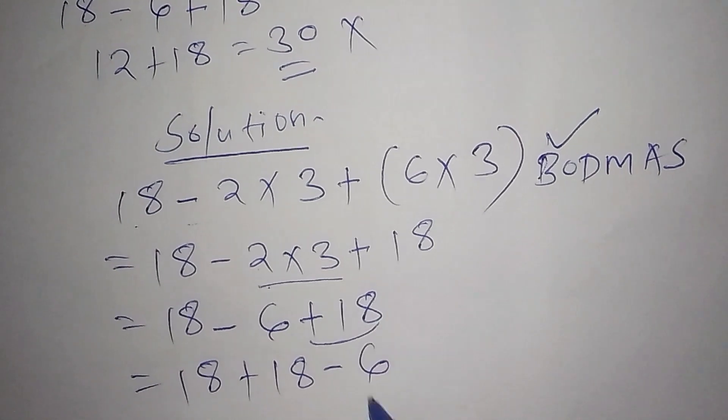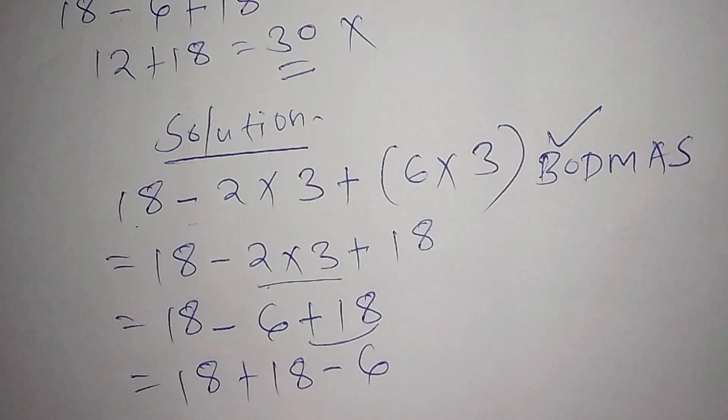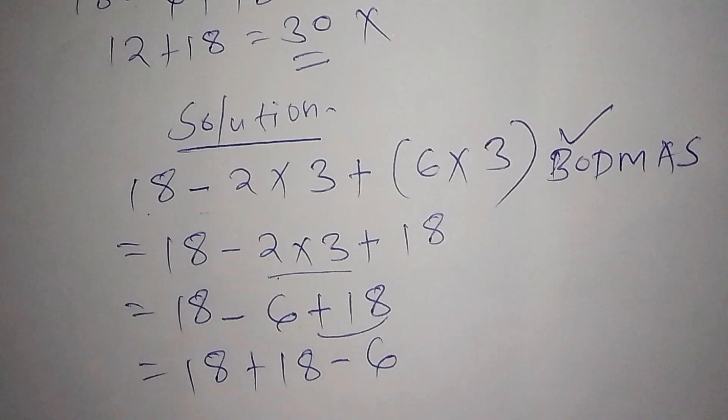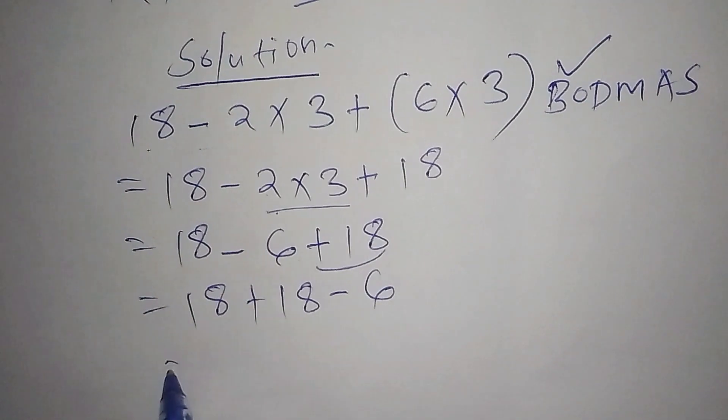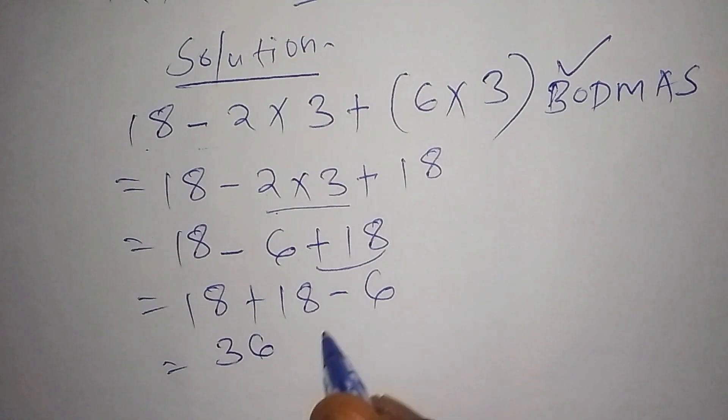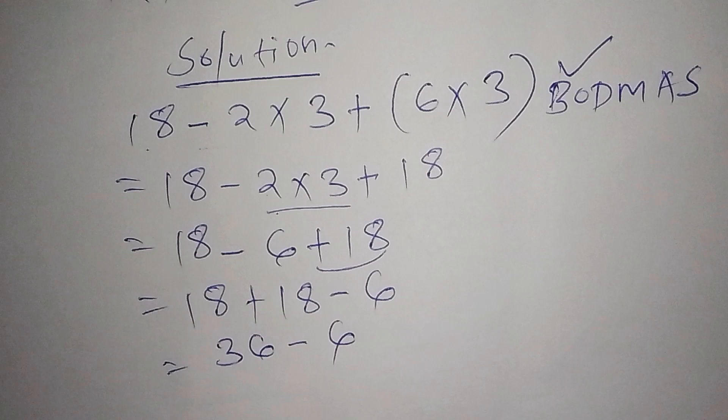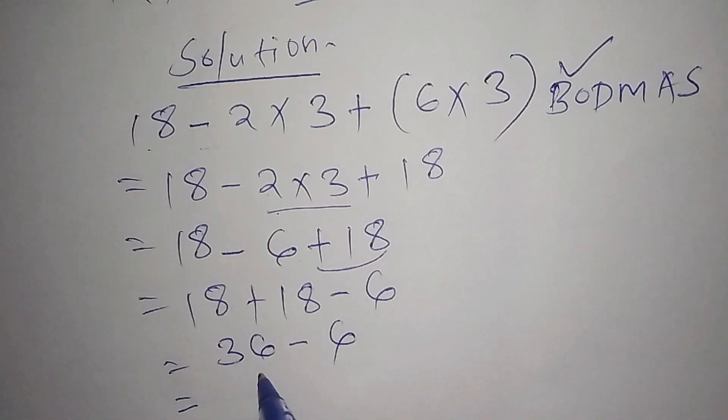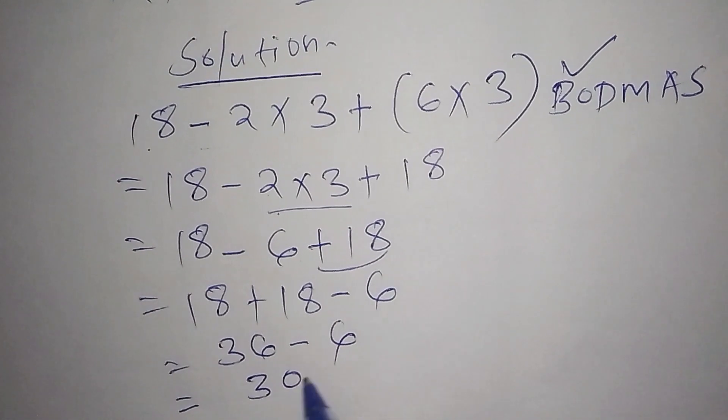Here we shall now say that 18 plus 18, we shall say it's 36, then 36 minus 6. So our final step is 36 minus 6, our final answer is 30.